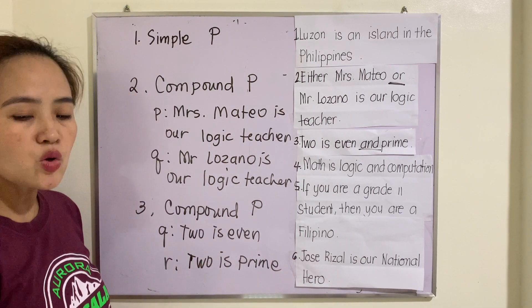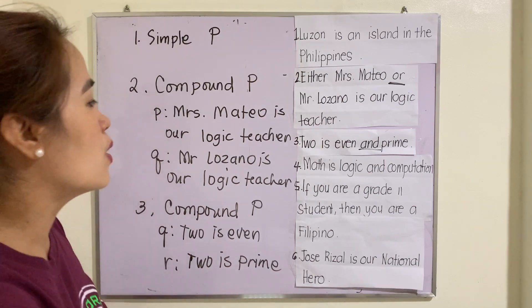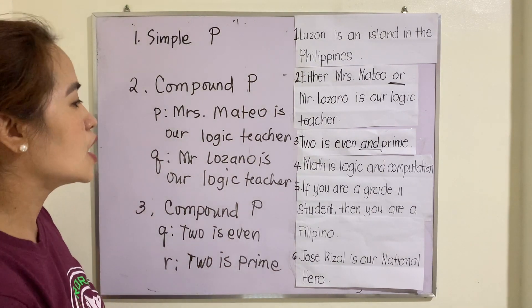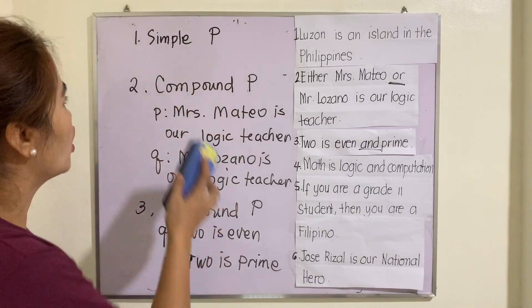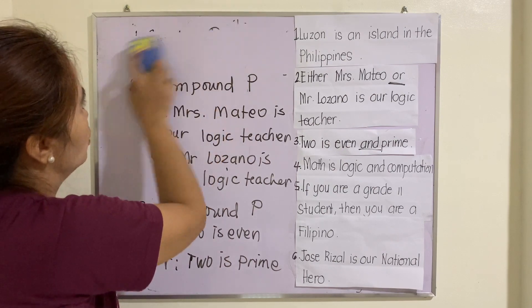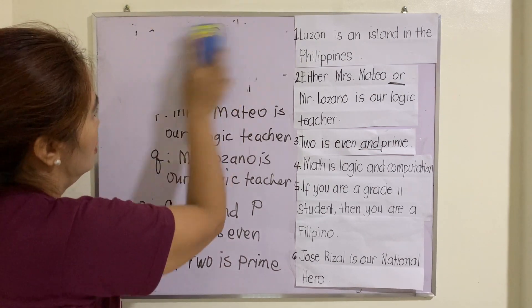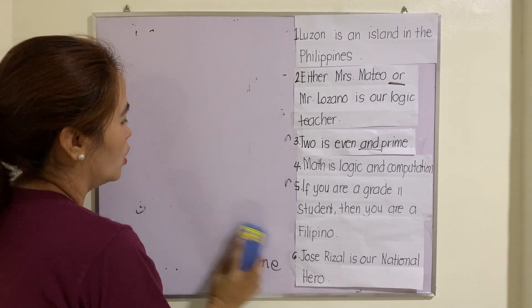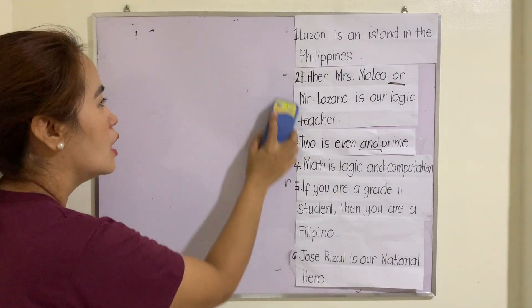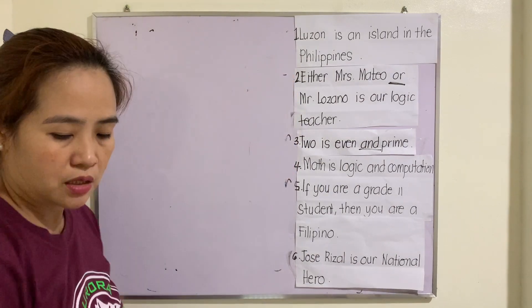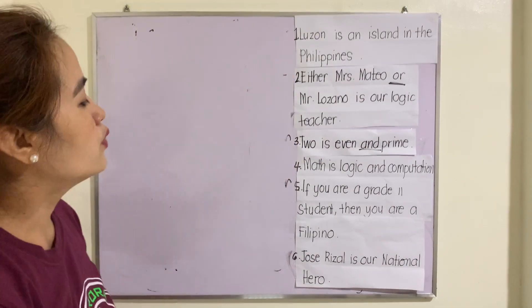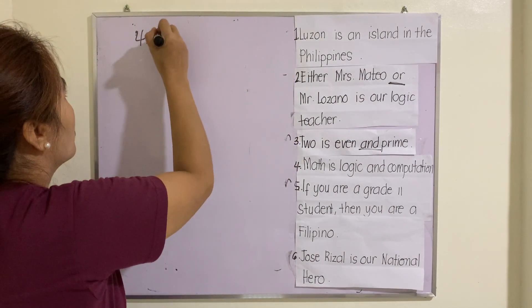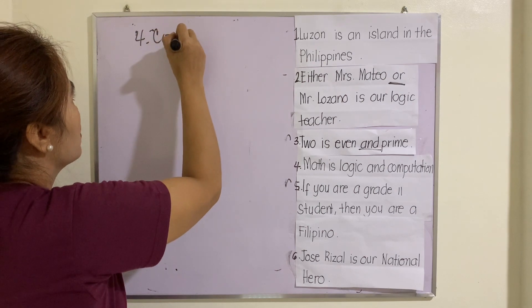Number four: 'Math is logic and computation.' Again we use the connector 'and', therefore this one is a compound proposition.